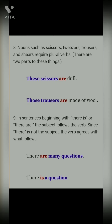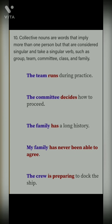Tenth point: collective nouns are words that imply more than one person but are considered singular and take a singular verb — such as group, team, committee, class, and family. In sab ke saath singular verb lagegi. Agreement tab hogi jab subject aur verb dono sahi lage hon. For example: 'the team runs'; 'the committee decides'; 'the family has a long history'; 'my family has never been able to agree'; 'the crew is preparing to dock the ship'.